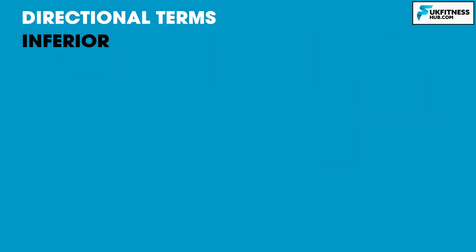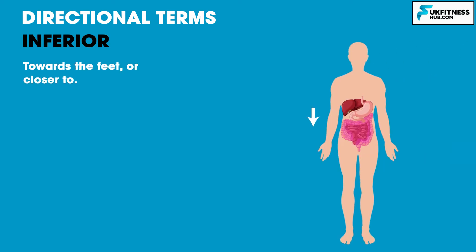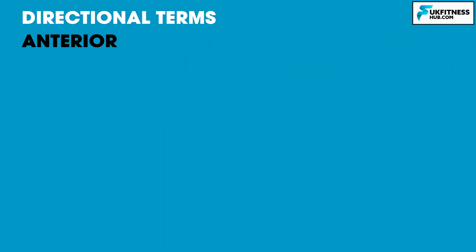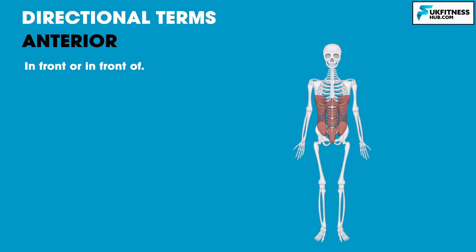Inferior means towards the feet or closer to. We could describe the intestines as being inferior to the stomach. Anterior means in front or in front of. The abdominal muscles are anterior to the spine, as they are in front of the spine.